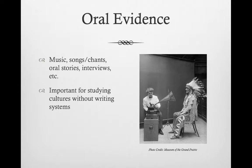The last major type of evidence used by historians is oral evidence, which is evidence produced by humans using language, but language that is unwritten. Examples of oral evidence include music, songs and chants, oral stories, and interviews. Oral history is especially important for studying cultures without writing systems, because many of those cultures maintained oral histories that they passed down from generation to generation, like the Hawaiians passing down genealogy via memorized chants. Many historians have collected these oral histories and written them down, like the woman in this image obtaining an oral history from a Native American man in the early 1900s.